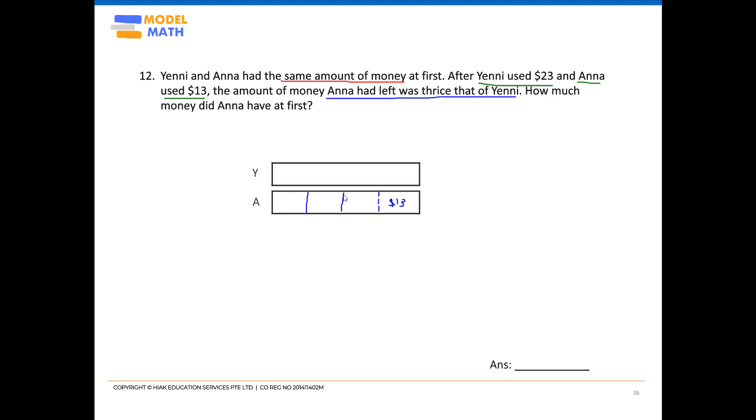From here, it will be clear how much I should be cutting Yeni's model, because given that Anna will have three times of Yeni, what Yeni should have left is one unit, of which then this model on the right side for Yeni would be $23.